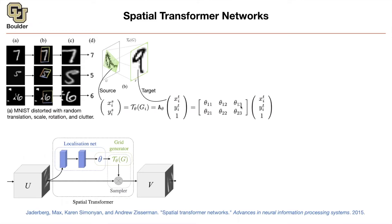This localization network is predicting some thetas — these are our thetas, which are basically the entries of your matrix: theta 1-1, theta 1-2, theta 1-3. The first matrix gets multiplied by your target. T stands for target, X and Y are the locations of pixel i. You do an affine transformation — A stands for affine — that's going to help you rotate this matrix, scale it, and the translation terms shift your locations because they are being multiplied by ones.